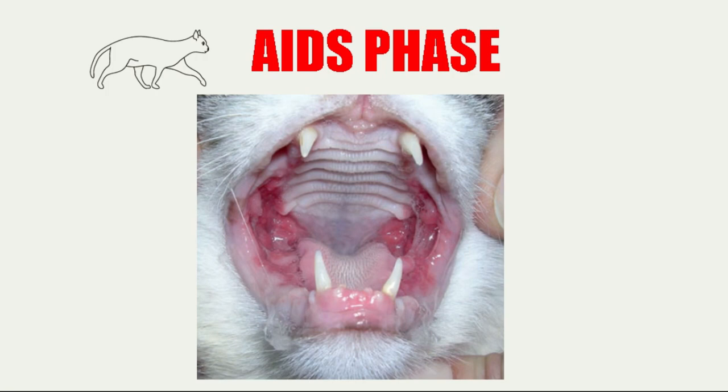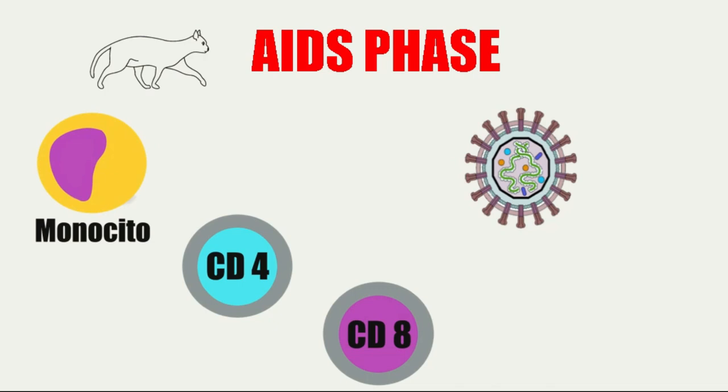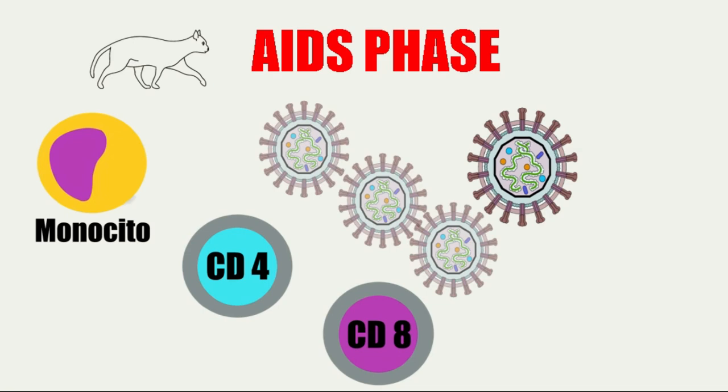The feline AIDS virus affects CD4 helper 1 positive T cells, CD4 positive helper 2 T cells, CD8 positive T cells, and macrophages. Therefore, it affects the entire cellular immune response. Subsequently, there will be a humoral response in which we have antibodies.